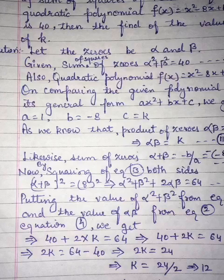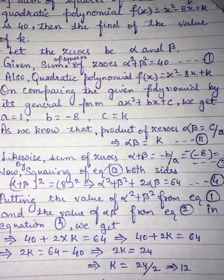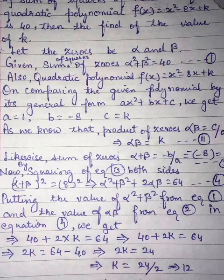Given here, sum of squares of zeros is alpha squared plus beta squared is equal to 40. Let's consider this equation number 1. Also, the quadratic polynomial f(x) is equal to x squared minus 8x plus K.